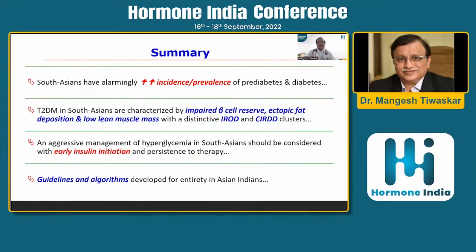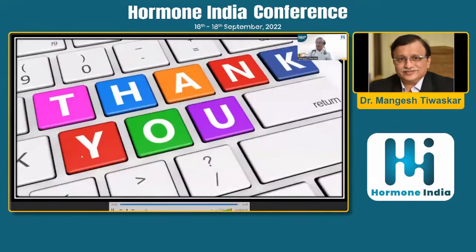To summarize: there are distinct clusters of type 2 diabetes which we need to proactively identify, as this will help in correctly choosing therapeutic interventions. As South Asians, we have insulin resistance, impaired beta cell reserve, extremely high ectopic organ fat deposition, sarcopenia, and a distinctive combined insulin resistance and insulin deficiency diabetes. We need early insulin intervention and India-specific guidelines and algorithms for our population. Thank you very much.